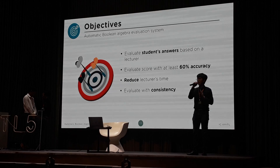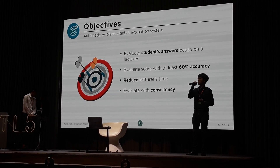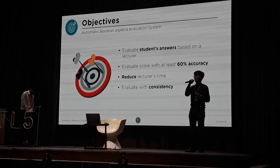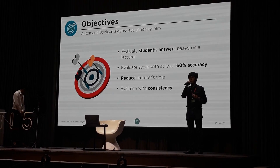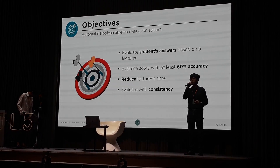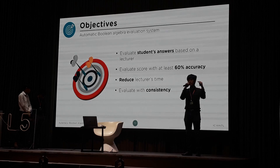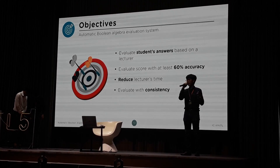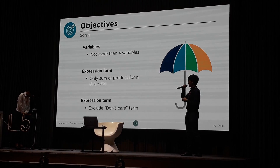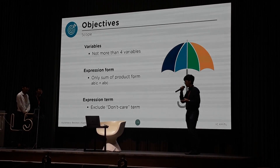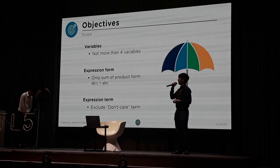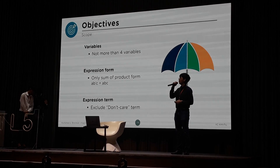This system is mainly to reduce the lecturer's time and to help mark exams with consistency. Because when marking a large number of exams — for example 200 student papers — human error can occur where exactly the same answer gets marked with a different score. We want to reduce that. However, we have to define the scope, because there are a lot of laws and theories of Boolean algebra. In this research, we are going to cover 13 of them.